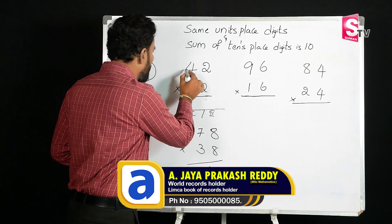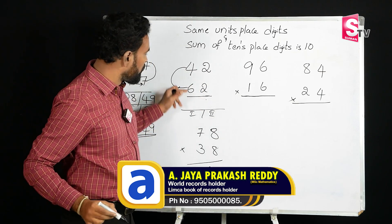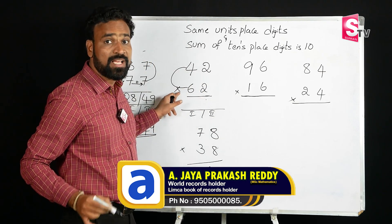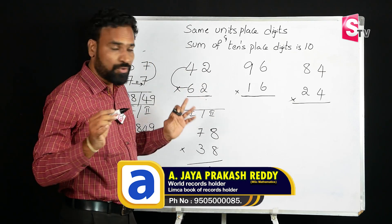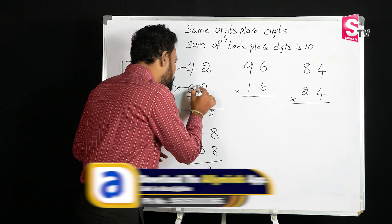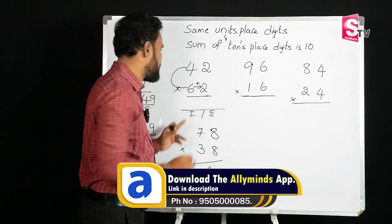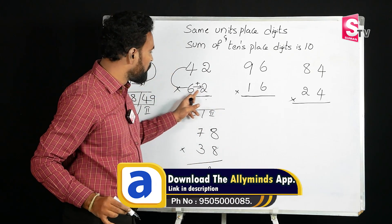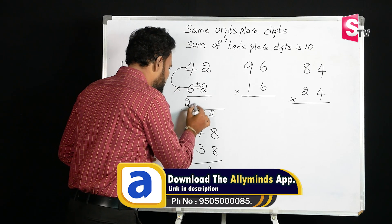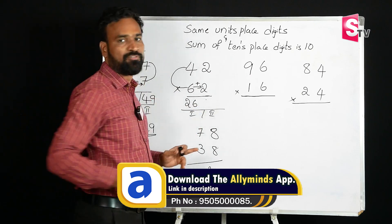For the next problem: what is four times six? Four times six is 24. Then immediately add the ones digit: 24 plus 2 equals 26. That is the first part of the answer.